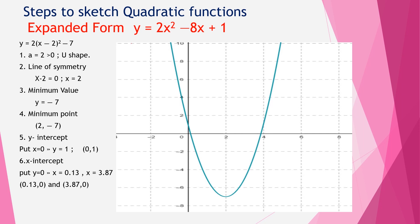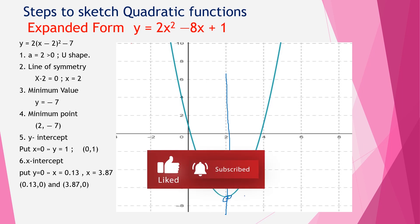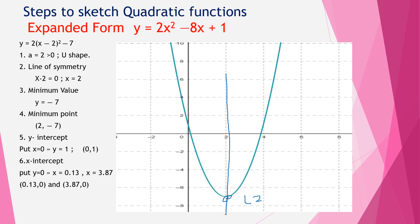To sketch the quadratic curve, first we draw the line of symmetry x = 2. On this line we plot the minimum point (2, −7), then the y-intercept (0, 1) and its reflection (4, 1). By joining these three points we have our required sketch. If the question requires x-intercepts, we can label those as well.